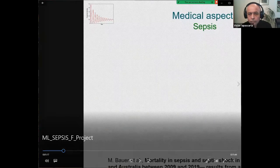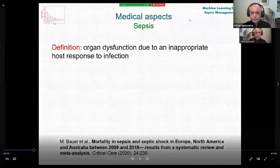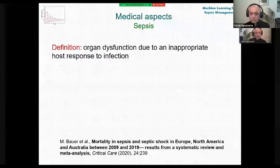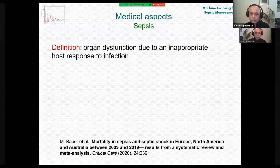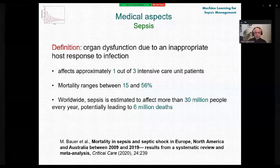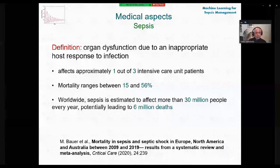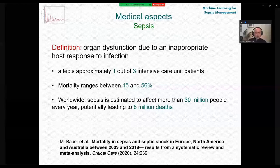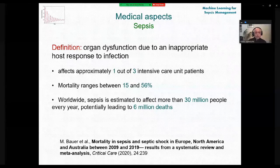Using the latest definition, we can state simply that sepsis is the situation when the body starts losing the fight with a microorganism. Statistics show that one out of three intensive care patients will present with sepsis. Mortality is quite high, ranging between 15% and 56%. Worldwide, sepsis affects more than 30 million people with 6 million deaths.